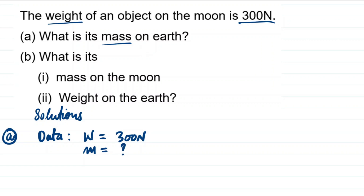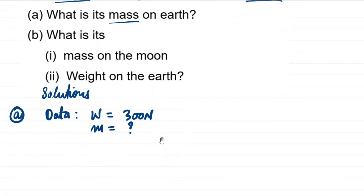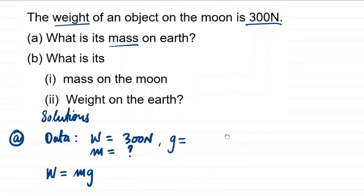For us to find mass, we must know the relationship between weight and mass. The relationship is given by the formula: weight is equal to mass times acceleration due to gravity (W = m × g). Now we also need to know the value of acceleration due to gravity — and this is where the trick part is.